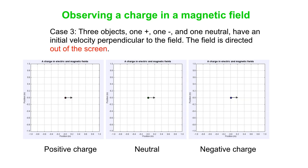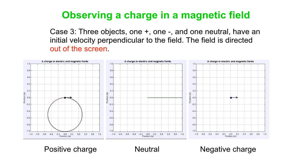Now we'll do the same thing for a magnetic field, but note that the magnetic field is out of the screen — it points toward you. When we do this with a positive charge, it looks a little like a parabola at the beginning, but in fact it's uniform circular motion — the thing goes at constant speed around a circle. The neutral object is unaffected, and the negative charge does the opposite of what the positive charge does.